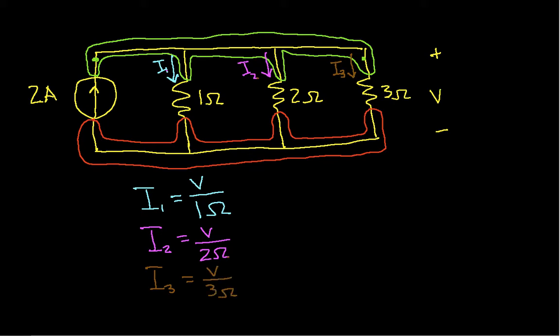I3 will be V divided by 3-ohms. So we've solved for these three currents in terms of our unknown voltage V and the resistances. Now we need to apply Kirchhoff's current law to the top node.